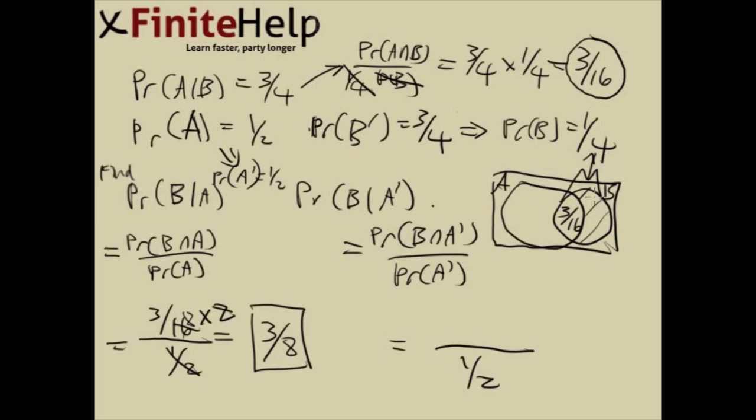So hopefully, you can deduce that this part is going to be one-fourth minus three-sixteenths. One-fourth is four-sixteenths, so this is going to leave one-sixteenth. So this area here is going to be one-fourth minus four-sixteenths minus three-sixteenths. So that's one-sixteenth.